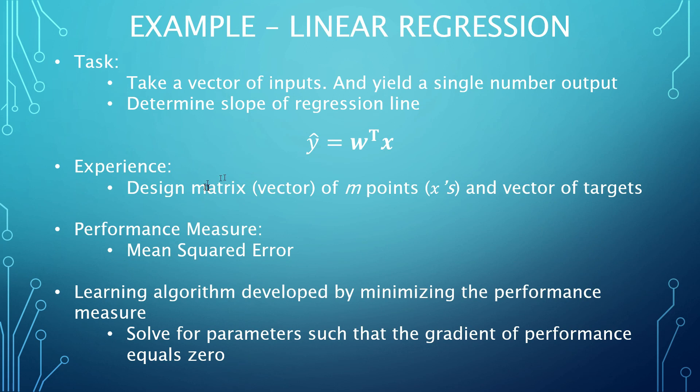To concretize these ideas, the authors present a simple example of machine learning using linear regression. This problem is approached from the machine learning perspective, so the task, experiences, and performance measure must be defined. The task is that the linear regression problem entails taking in a vector of inputs and yielding a single number output. Specifically, this is done by multiplying each input by a weight value and then summing them, which is represented by the matrix multiplication here. The weights are parameters, the variables that are subject to change in the learning process. When it comes to the experience, say we have a design matrix of n example points that will not be used for training, only for evaluation, since there is also a vector of targets providing the proper output for each input.